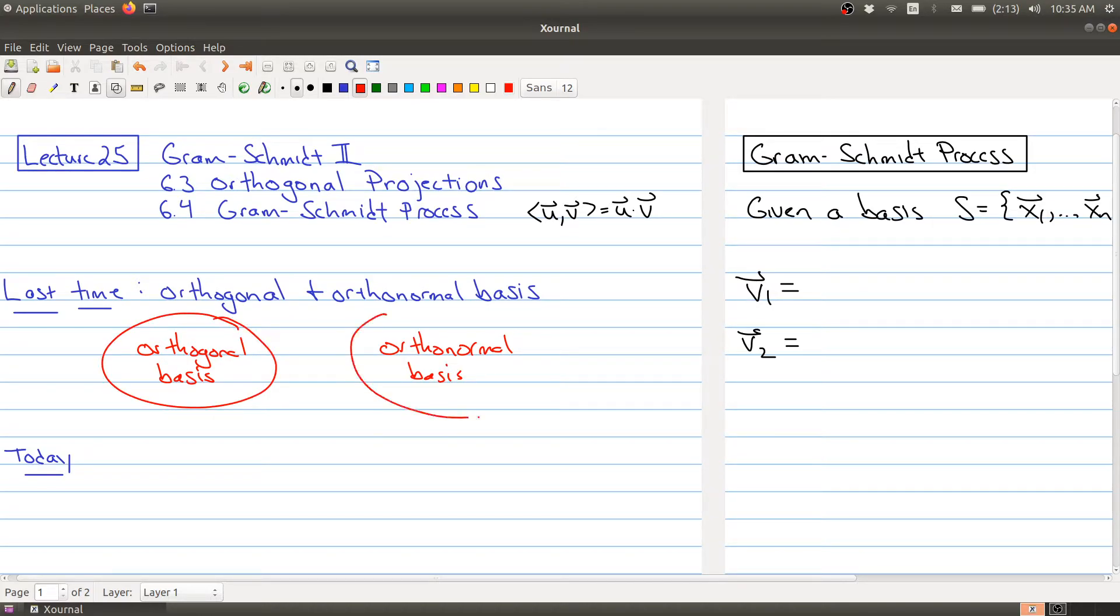So over here we have orthogonal basis. Over here we have an orthonormal basis. And to go from here to here, you normalize your vectors. So that just means rescaling your vectors so they all have the proper length.